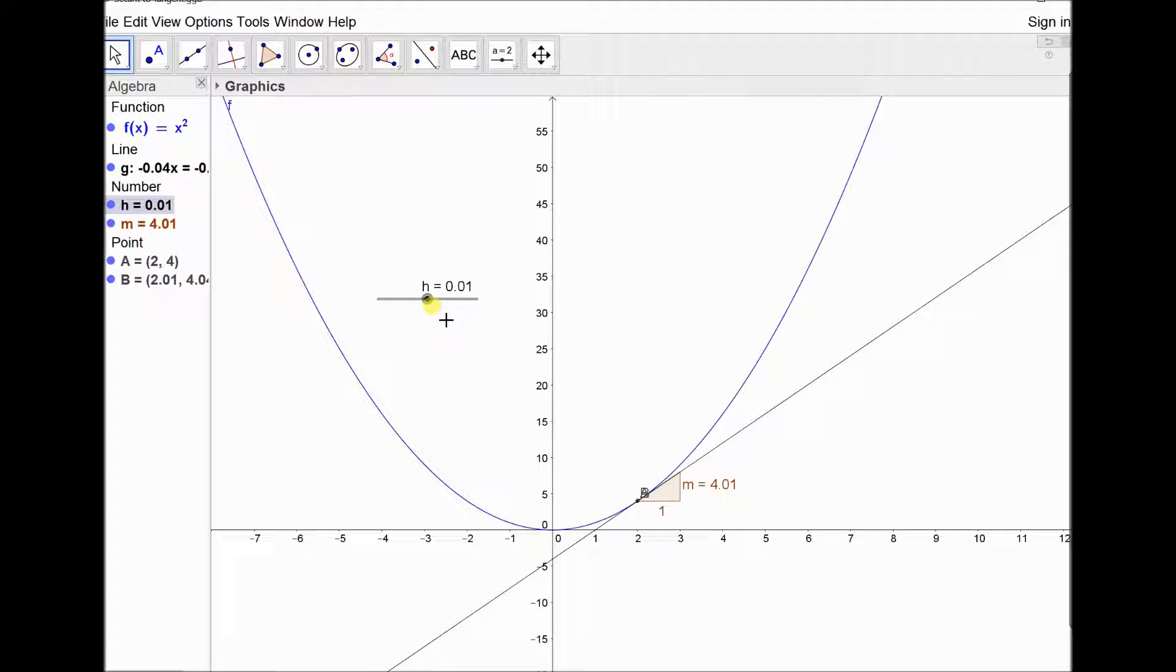It's almost there. Now as soon as it gets to 0, the line's going to disappear because it's trying to put a line through a single point, and it panics a little bit. But peering back on the other side, we can see that the gradient exactly at 2 is 4.